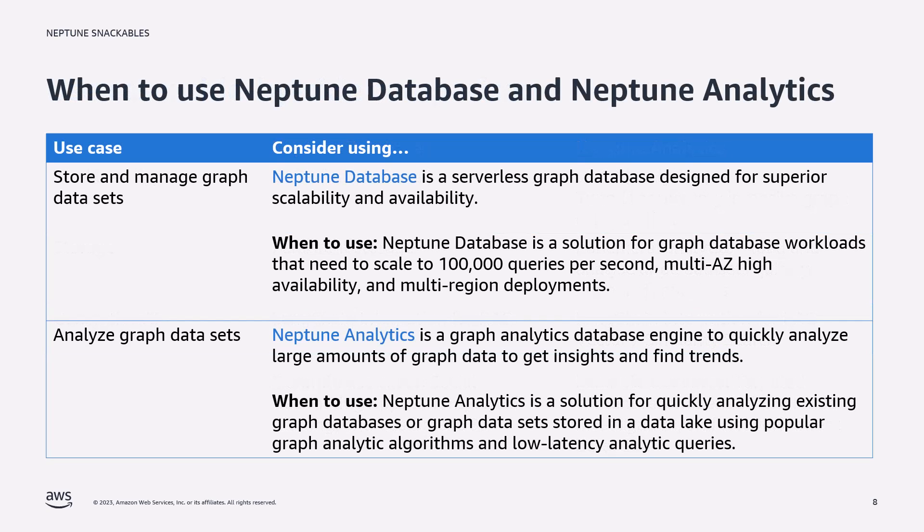So, to the big question: when should you use Neptune database versus Neptune Analytics? If you have a transactional workload with requirements such as 100,000 queries per second, or multi-availability zone and/or multi-region deployments, then Neptune database is the right fit. If, however, you need to quickly load large amounts of graph data and then analyze it using low latency graph algorithms such as page rank, top-K search, and weakly connected components, then Neptune Analytics is the right fit.